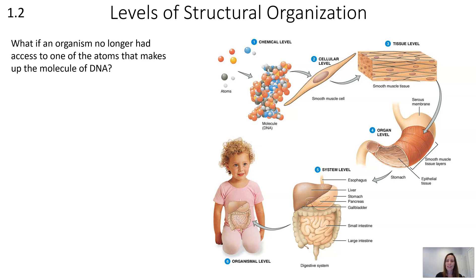To understand the importance of atoms, let's do a little thought experiment. What if an organism no longer had access to one of the atoms that makes up the molecule of DNA? If we were missing some critical part of DNA, our cells would no longer be able to divide. The process of mitosis is really critical in terms of both growth and repair of our cells. So missing one critical atom would impact a molecule, which would impact the cell.